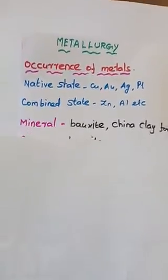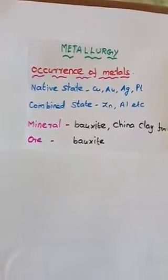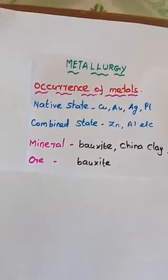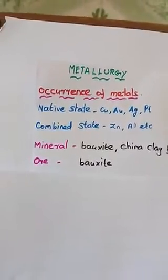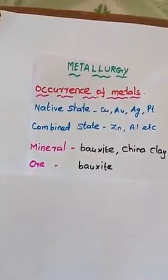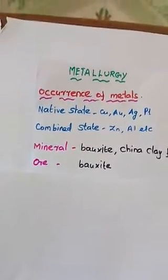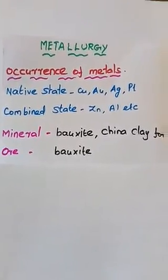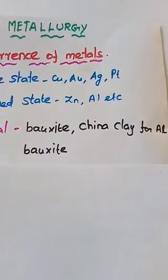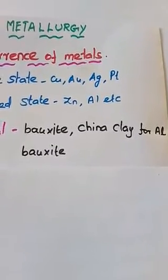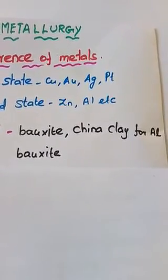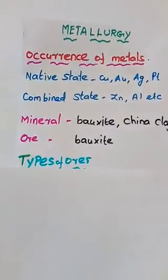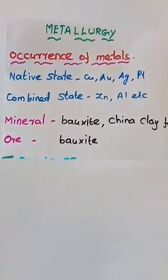Now we move to minerals and ores. A mineral is obtained by mining and contains a metal in free state as well as combined state. Simply, minerals are the source of metals. For example, bauxite and china clay are minerals of aluminium.